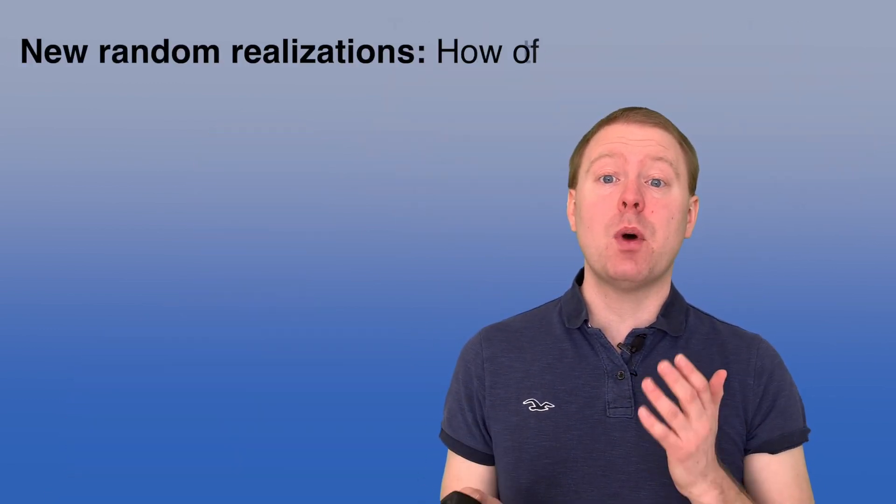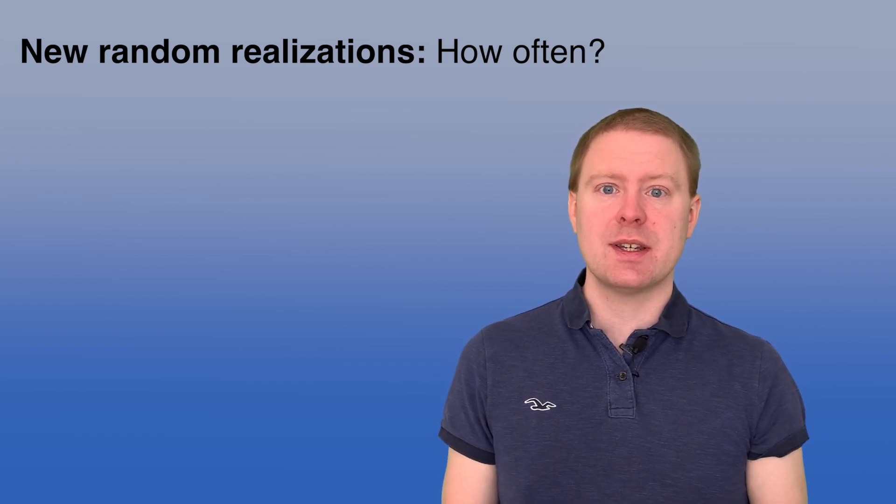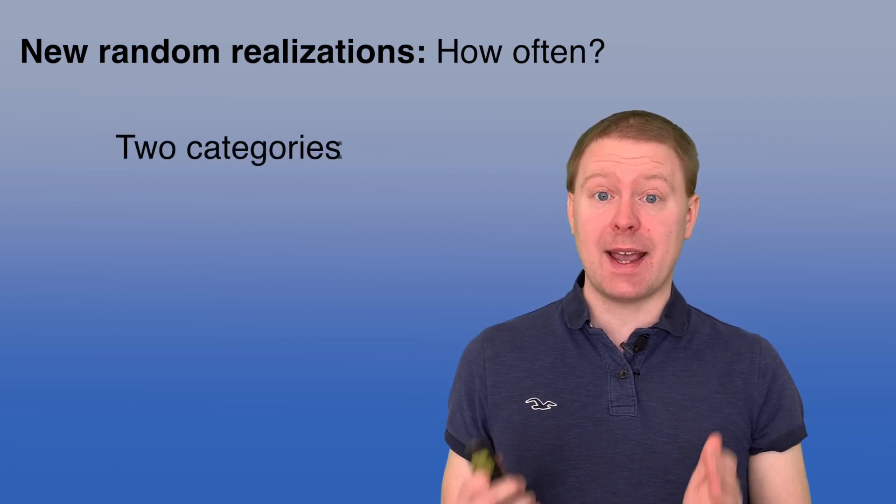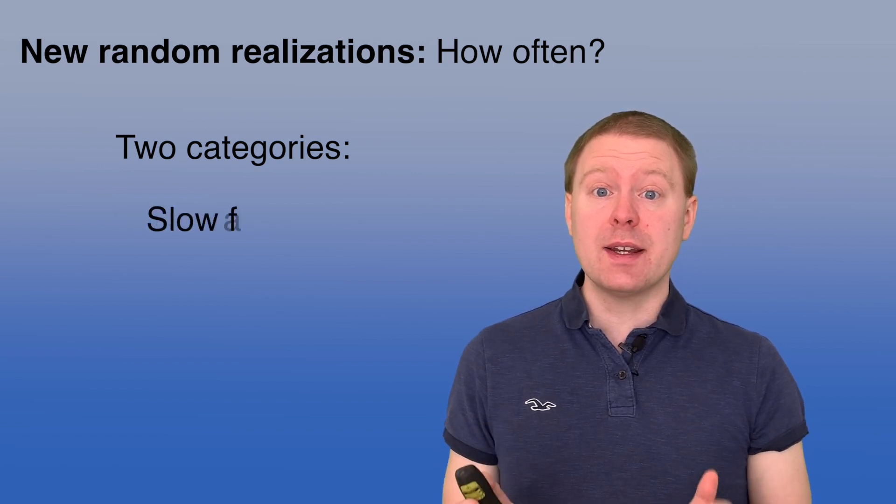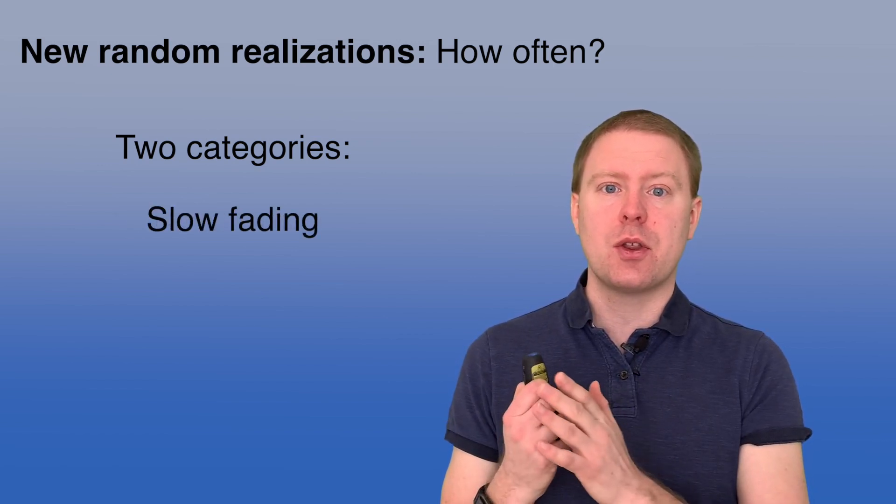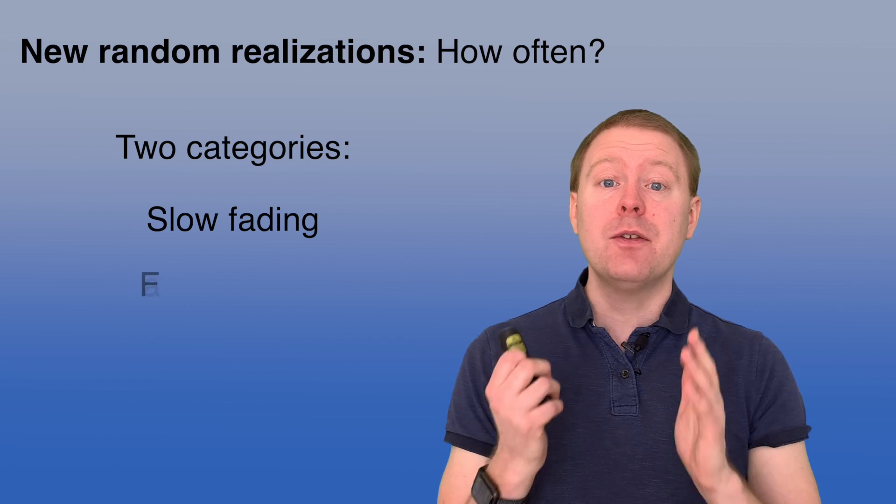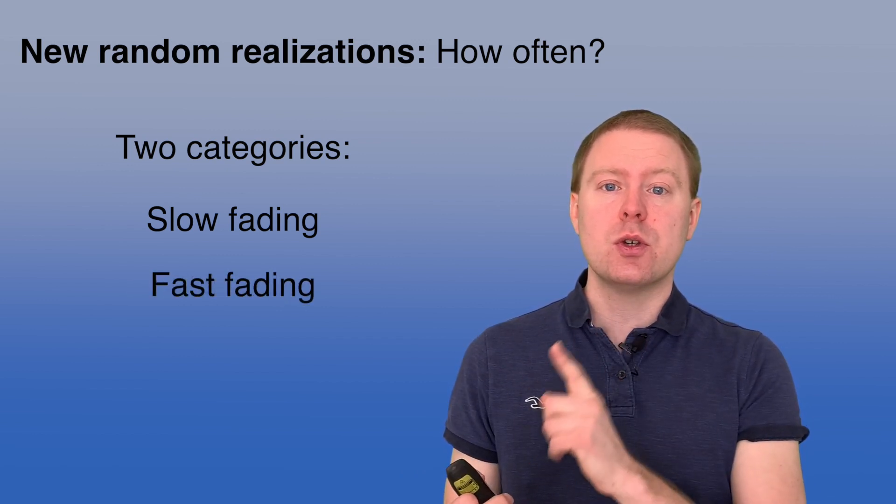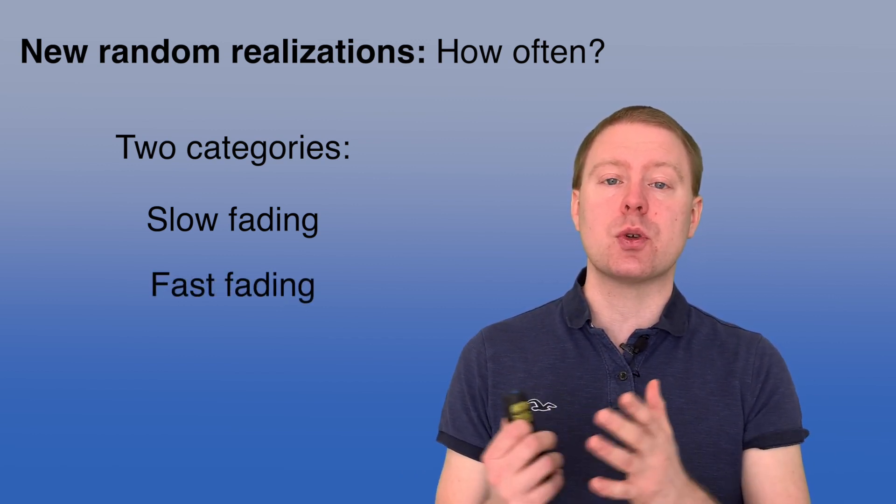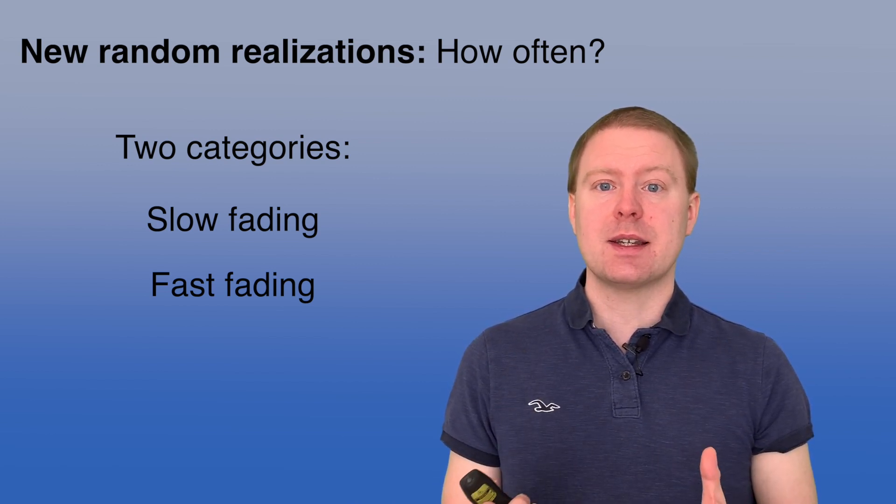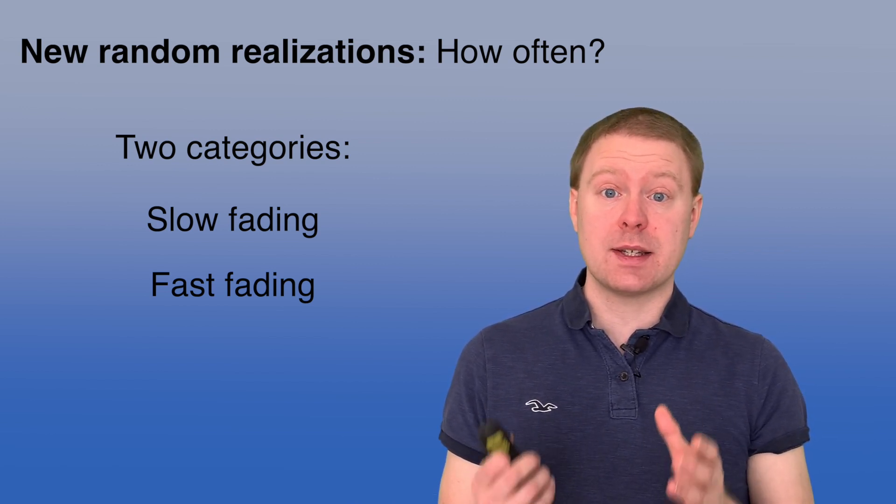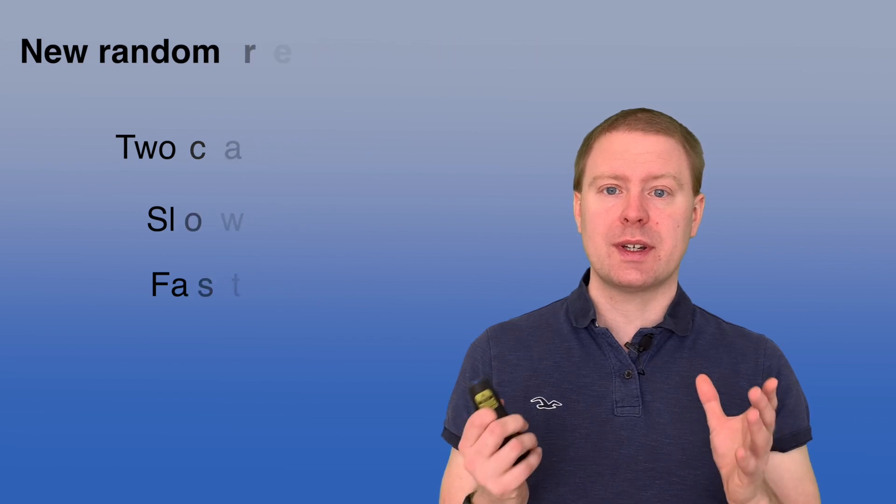When you have a random channel distribution, the question is how often do you get new realizations? And in the next two videos, we will look at two main categories of that: slow fading, where you have one random realization throughout your entire transmission, and fast fading, where you get new random realizations all the time during your transmissions, and the capacity can be analyzed in different ways in these two canonical cases.